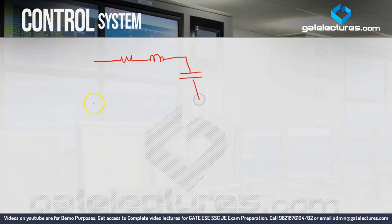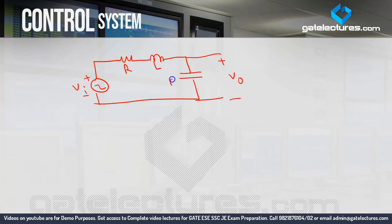This is a series RLC circuit. If I take an input VI here, and consider an output V0 across C, we can realize a second order system via this circuit. Here, in addition to R, L and C are also present. The unit of L is Henry, C is Farad, and R is Ohm — all have different units. So we need to take the Laplace transform of the circuit, which will make the units of R, impedance of L (that is Ls), and impedance of C (that is 1/Cs) all become Ohm.